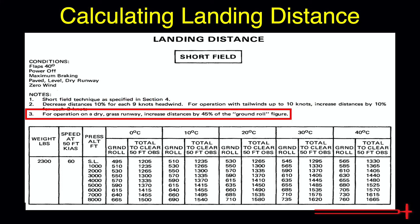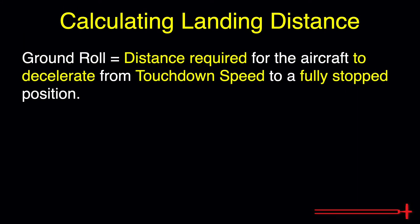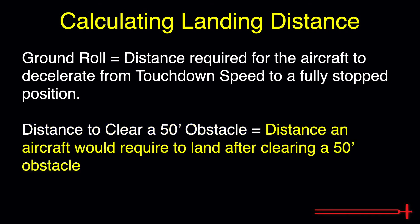Lastly, dry grass runways increase the ground roll distance by 45%. The numbers remain unadjusted when taking off from paved runways. Ground roll refers to the distance required for an aircraft to decelerate from touchdown speed to the fully stopped position. Distance to clear a 50-foot obstacle takes it a little further — this is the distance an aircraft would require to land after clearing a 50-foot obstacle at the approach end of the runway, plus the distance required to decelerate to the fully stopped position. We should pay especially close attention to both figures when operating to relatively short fields or those with obstacles at the approach end.